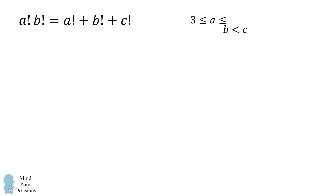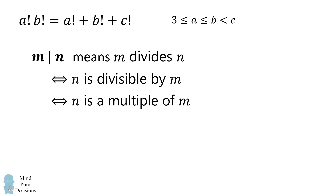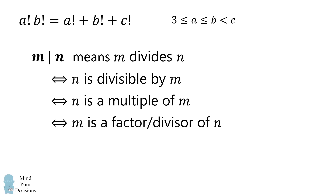Before we proceed to the next part of the proof, I'll go over a bit of notation. The notation m divides n means n is divisible by m, equivalently n is a multiple of m, or m is a factor or divisor of n. For example, 2 divides 4, 3 divides 12, but 2 does not divide 5.